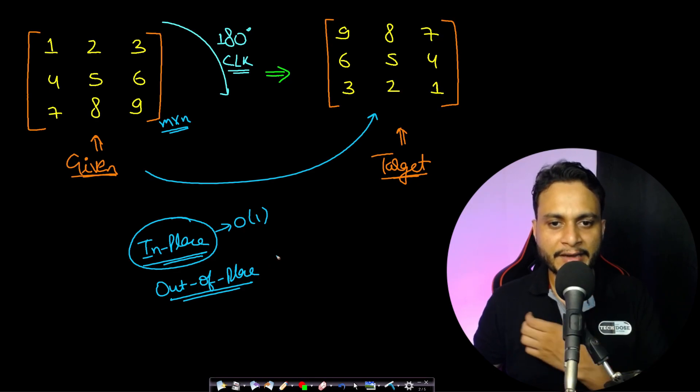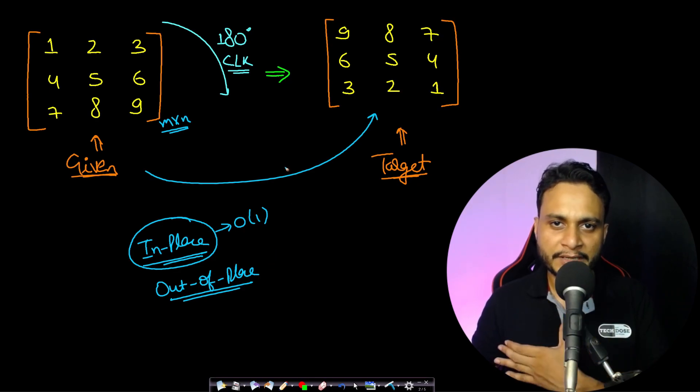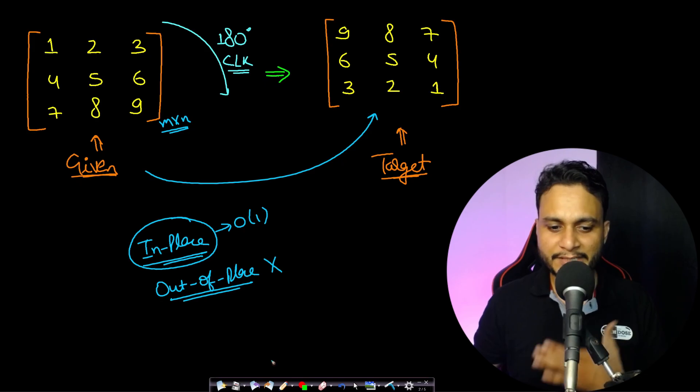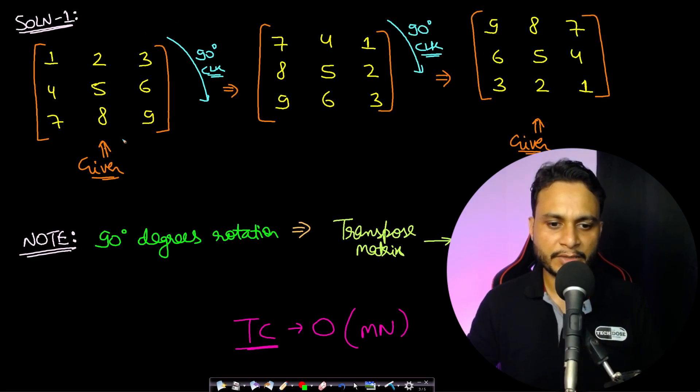An out-of-place technique can be you can take an array outside where you will copy the entire row and then you will put it back at its correct place. So don't do all those techniques. So let us look at some of the in-place algorithms by which you can solve this problem.